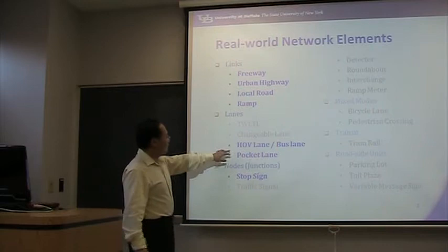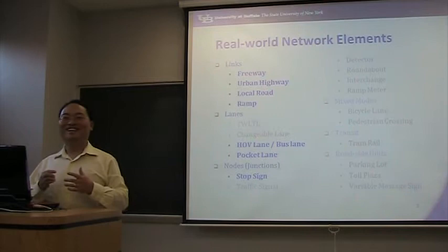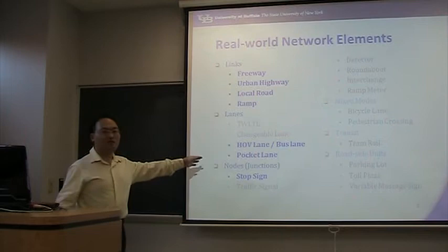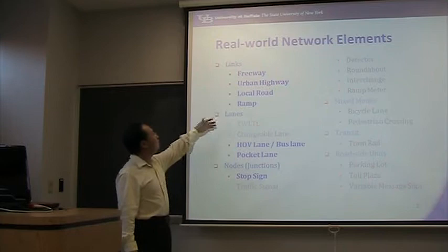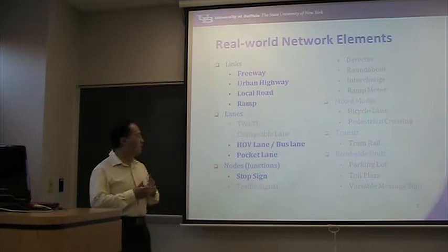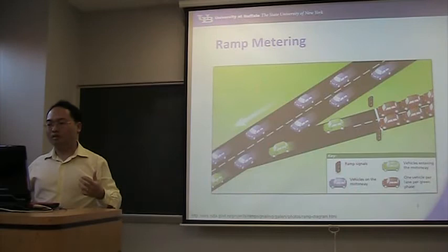Does everyone know what HOV is? HOV means high occupancy vehicle — such as when you are carpooling, you have more than two people in the vehicle, that's called HOV. Links include freeway, urban highway, and local roads. We are going to talk about HOV lane, bus lane — these lanes are called managed lanes because they are exclusive for a certain type of vehicle. And parking lane, stop sign.